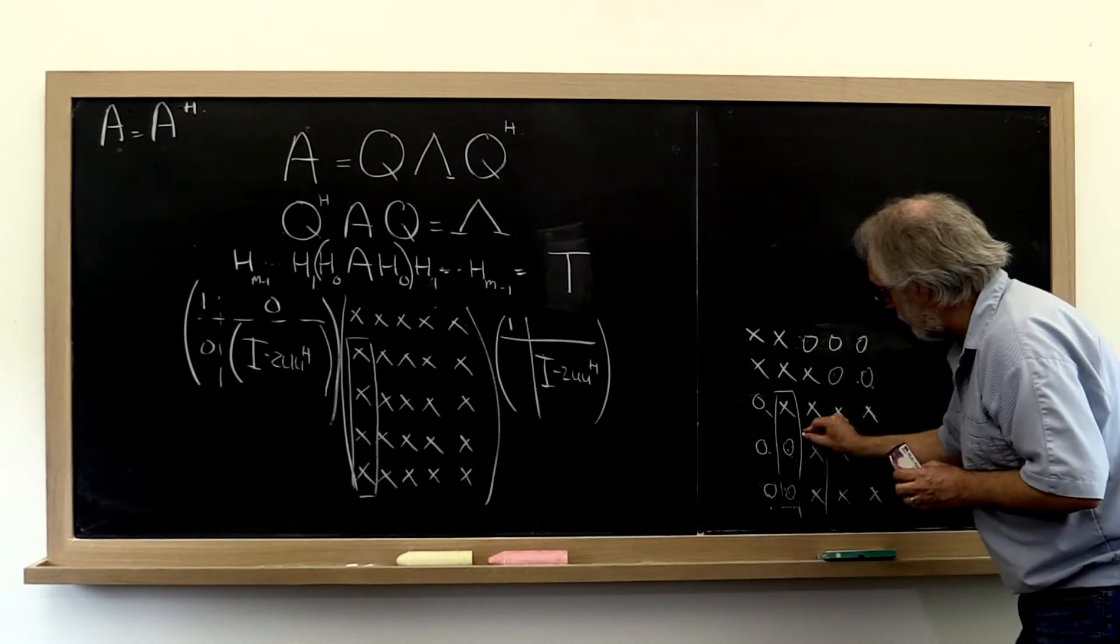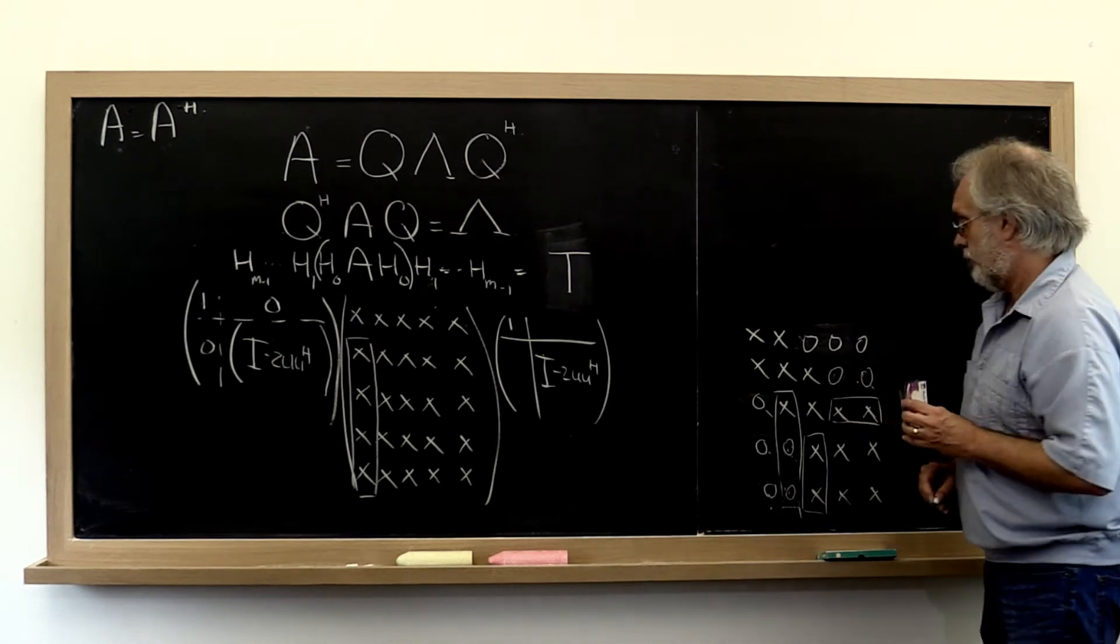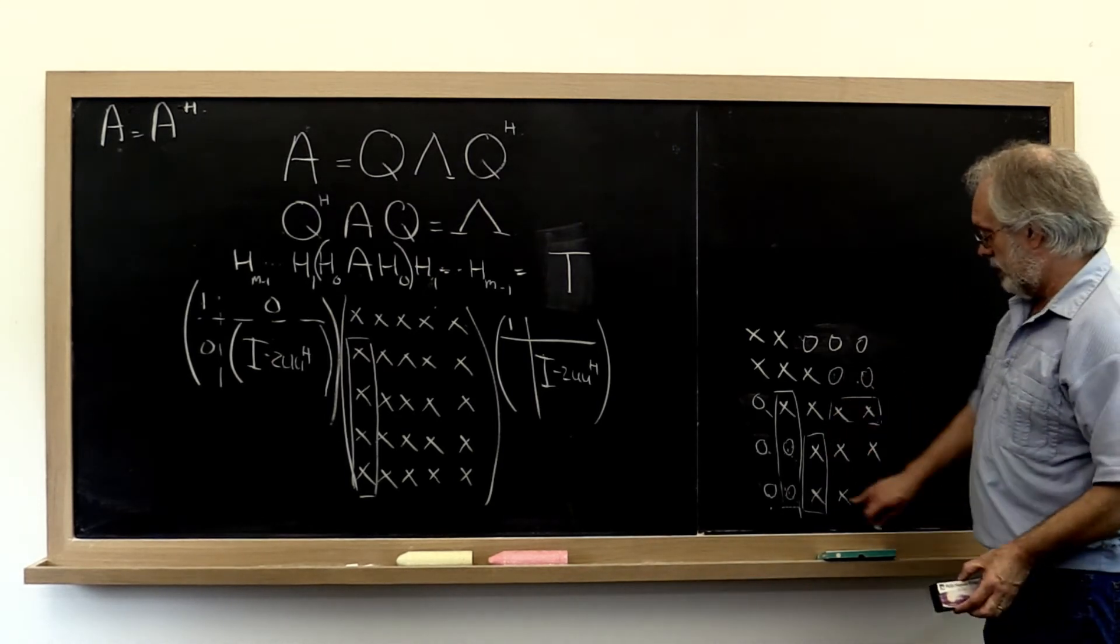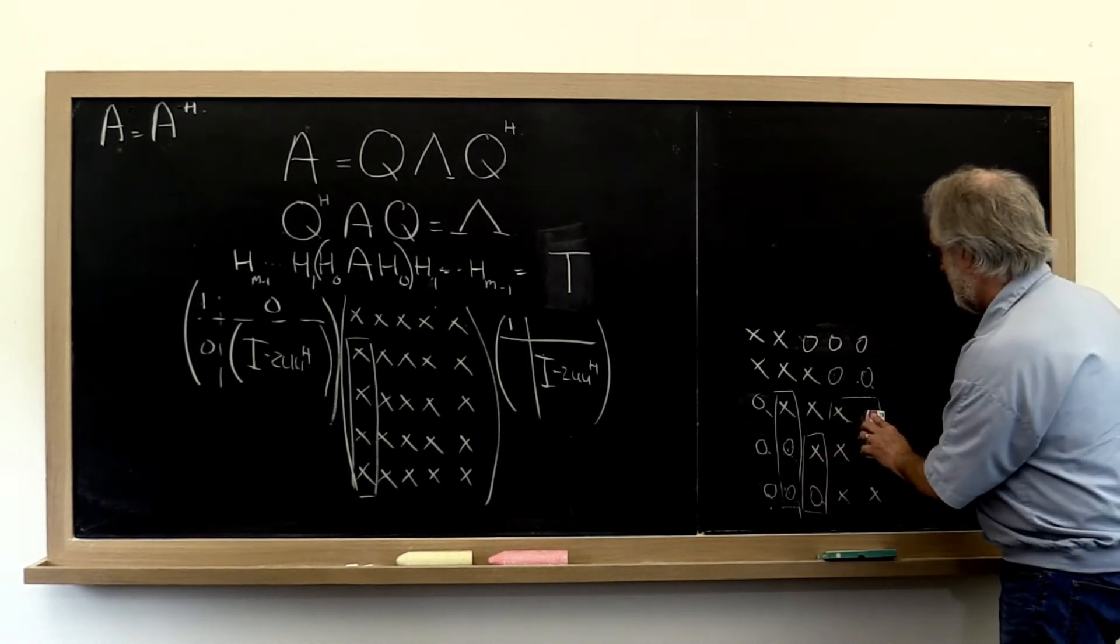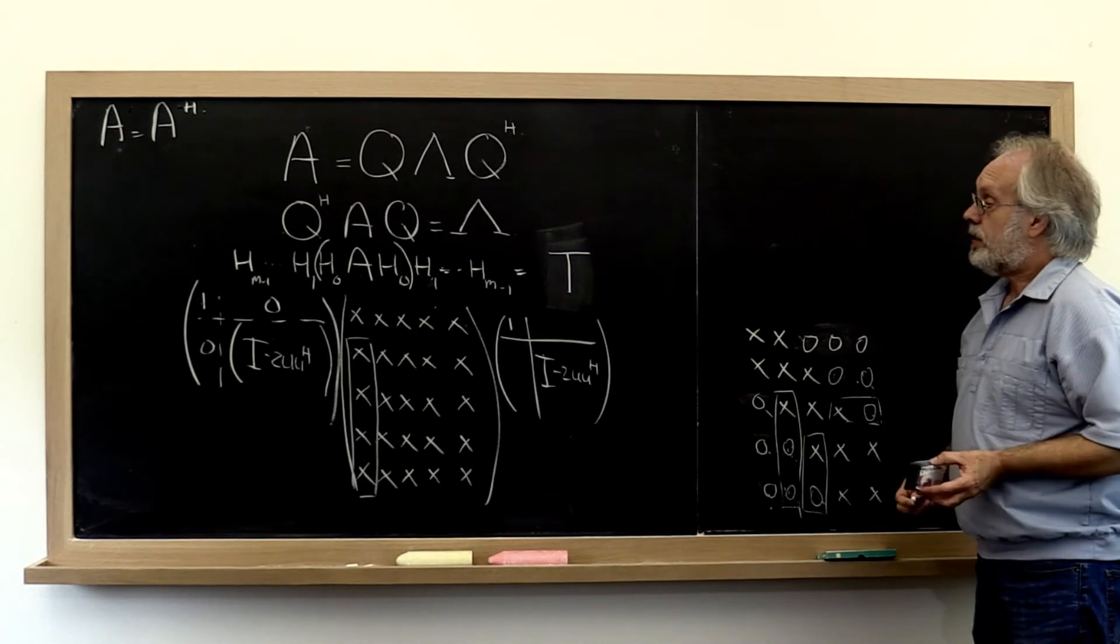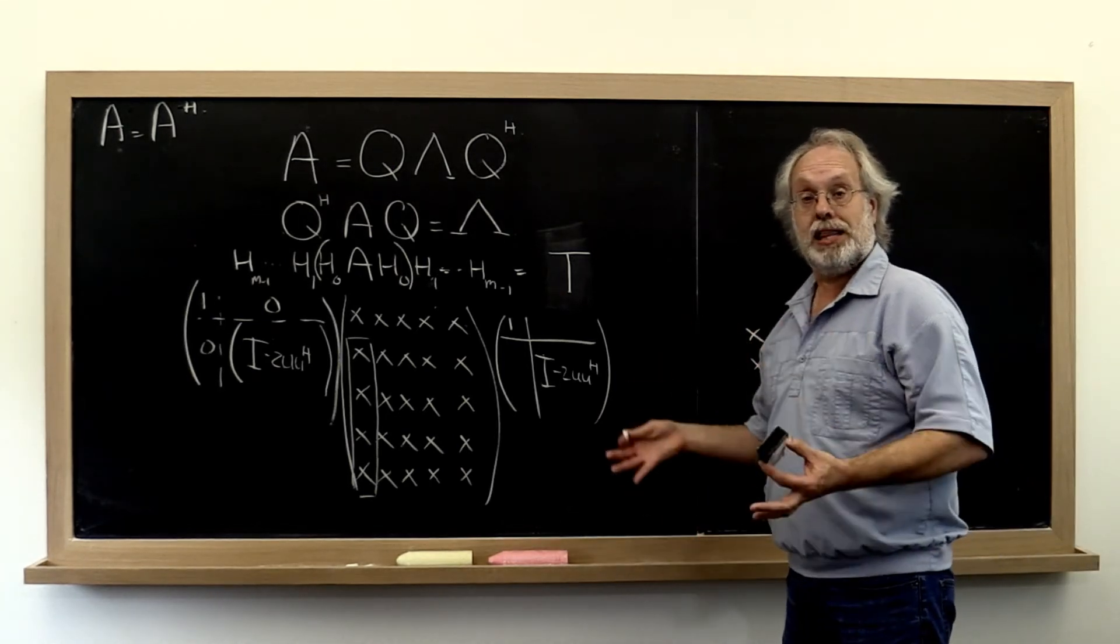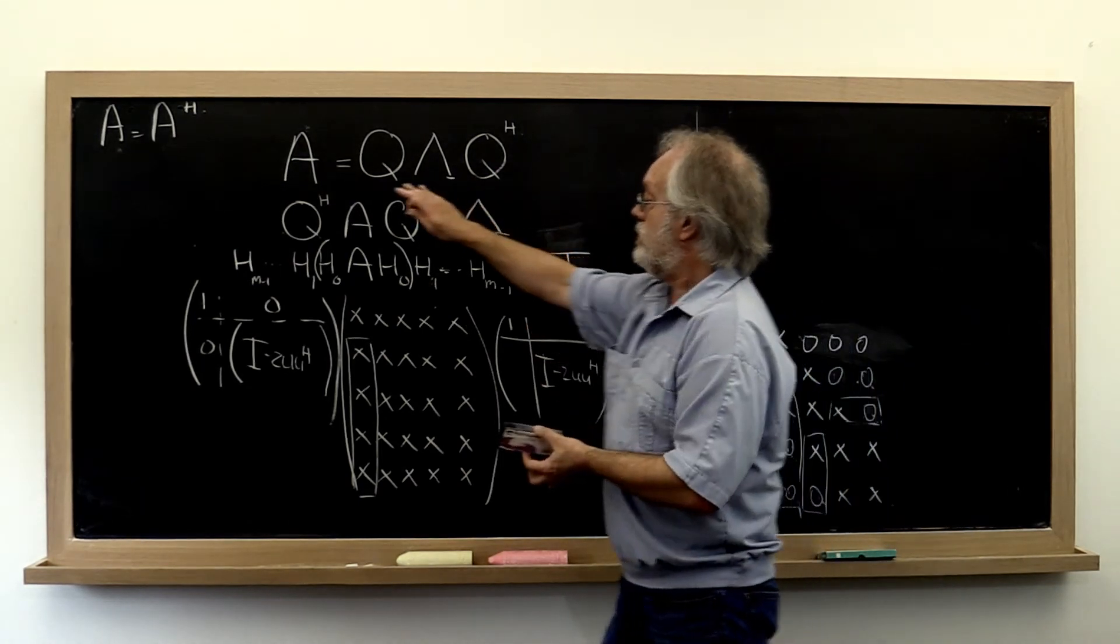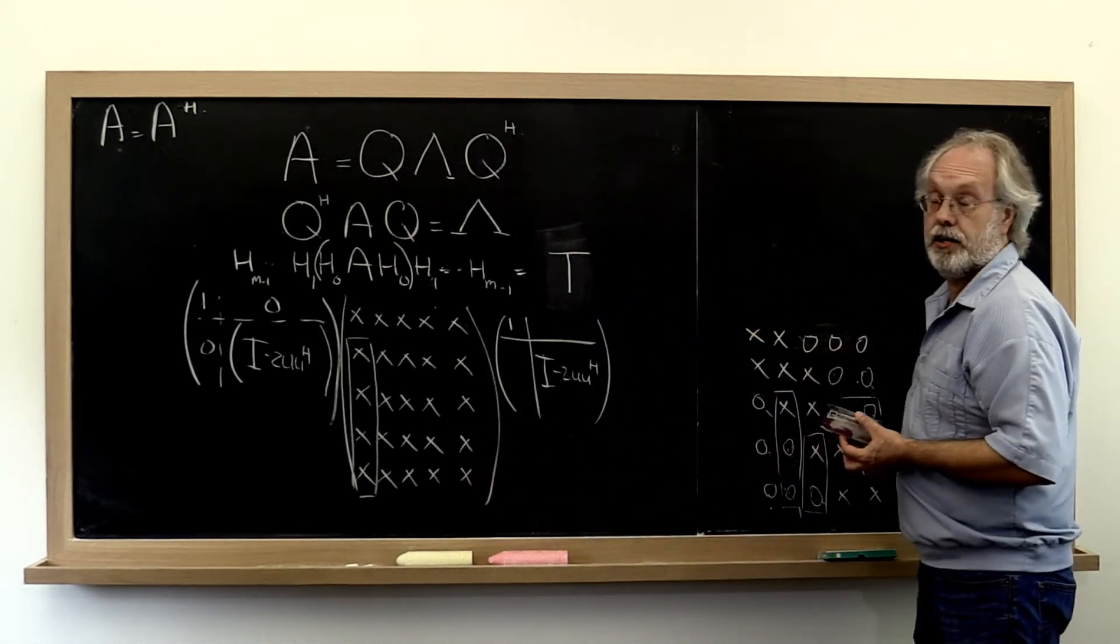Then we can compute a Householder transformation from this part of the third column and third row. That then introduces a zero right here. What we've just described is a method that reduces the original Hermitian matrix A to a Hermitian matrix that's tridiagonal.